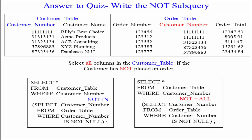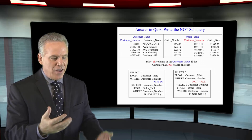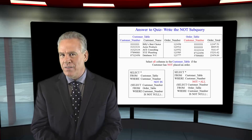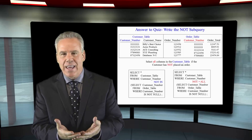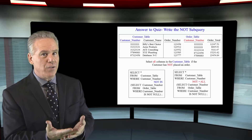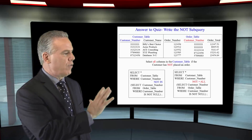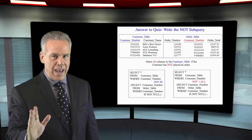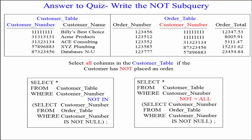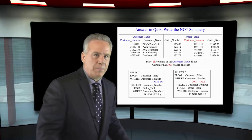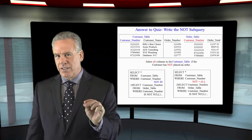You see, when you have a NOT IN and you are taking information from a subquery list, if there is a null value in that list, you'll never get any information back. That's why I said WHERE customer number IS NOT NULL — because I'm protecting myself against that.